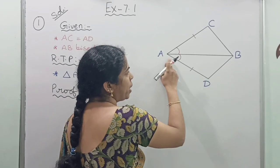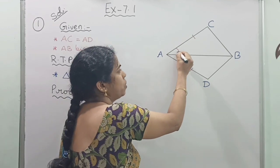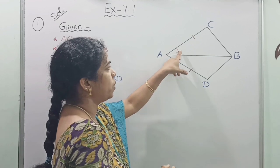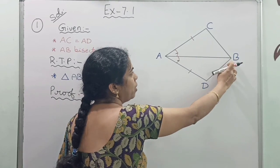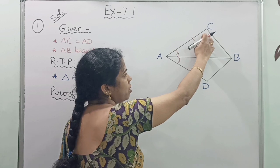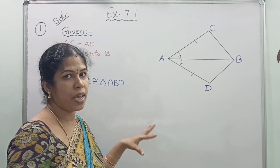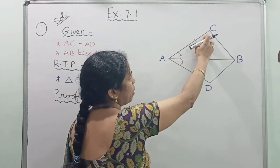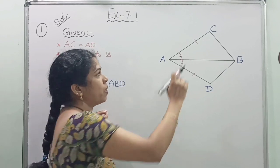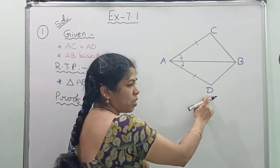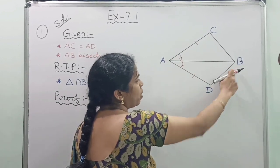AB line segment bisects angle A, which means angle A is divided into two equal parts. These two angles can be named in two different ways — starting from B you can say angle BAC, or angle CAB. But name them with the corresponding parts exactly. So angle CAB will be equal to angle DAB. For angle C, the corresponding part is D, so you need to start naming the angle from there: angle CAB is equal to angle DAB.